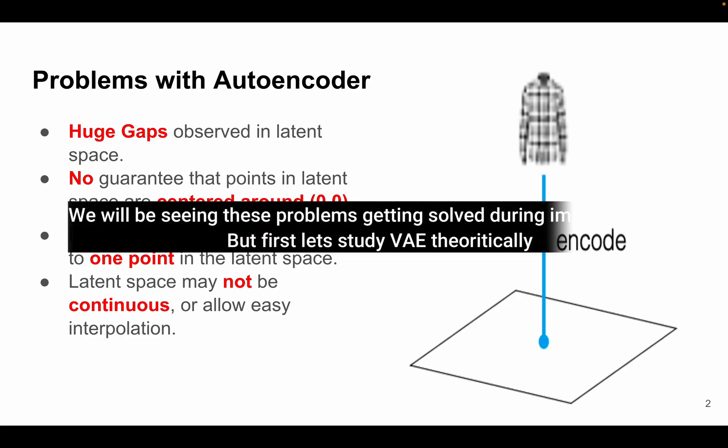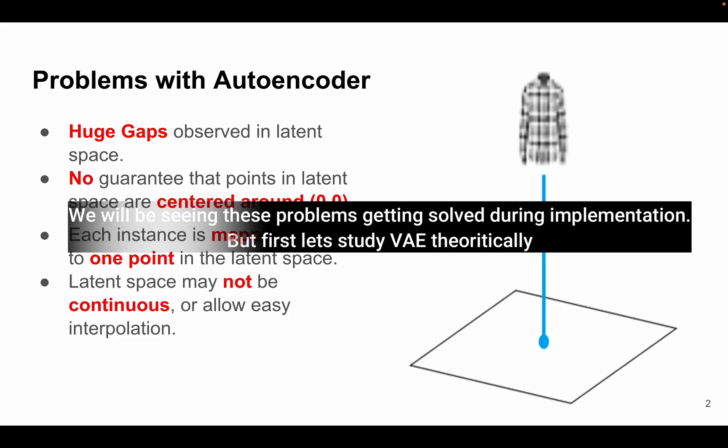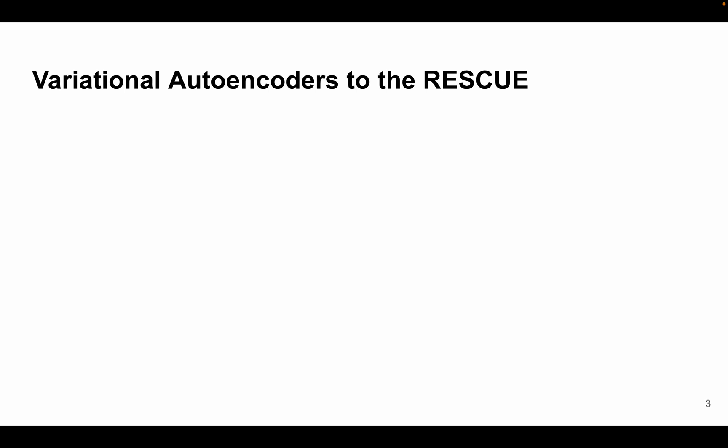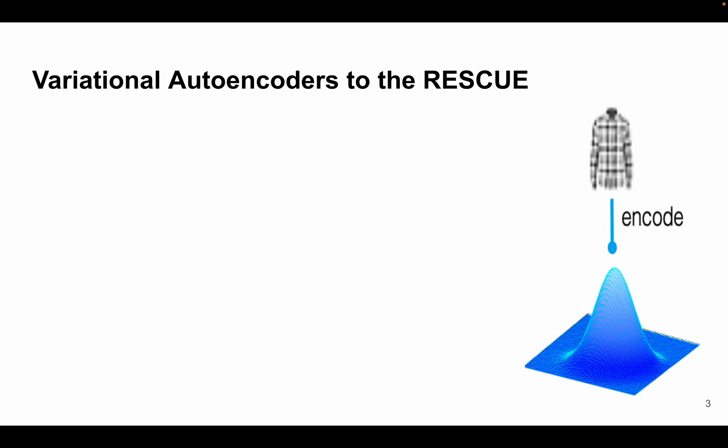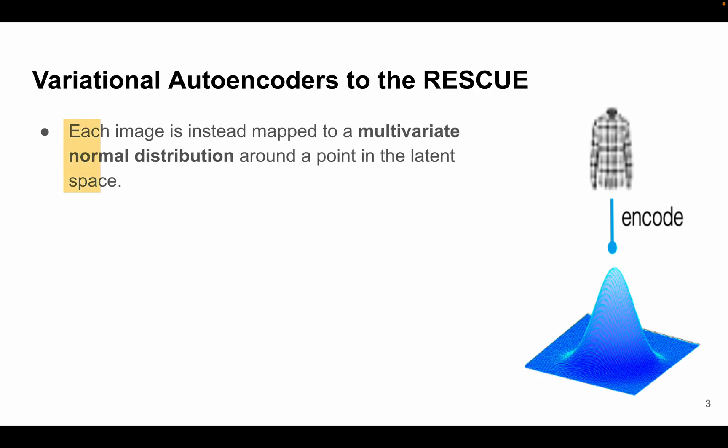Now we will be seeing these problems getting solved during implementation of variational autoencoders, but first let's study what exactly is variational autoencoder theoretically. We will try to address and solve the limitations of vanilla autoencoders using variational autoencoders. In variational autoencoder, each image is instead mapped to a multivariate normal distribution around a point in the latent space.